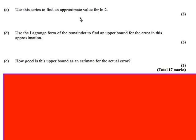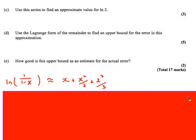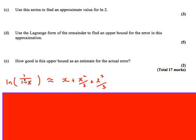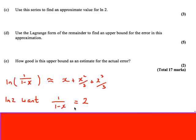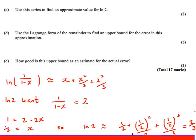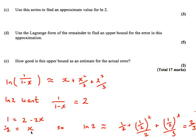So use this series to find an approximate value for ln 2. We've just found out that ln of (1 over 1 minus x) is approximated by x plus x squared over 2 plus x cubed over 3. Now, ln 2 — I need to make this bracket equal to 2. So I set up: 1 over (1 minus x) equals 2. That gives me x must be a half. So now I know that x is a half, all I need to do is put x equals a half into these values. So ln 2 is approximated by putting a half in, and I get ln 2 is approximately 2 thirds.